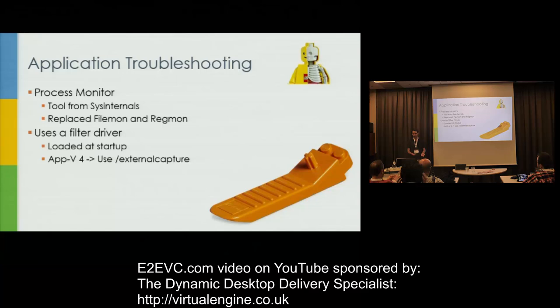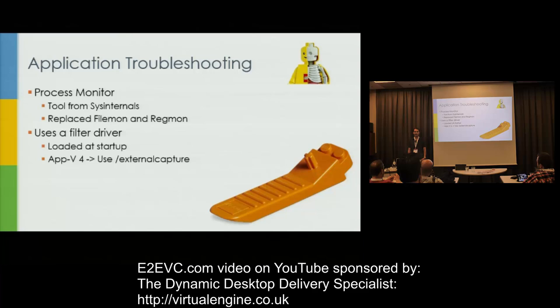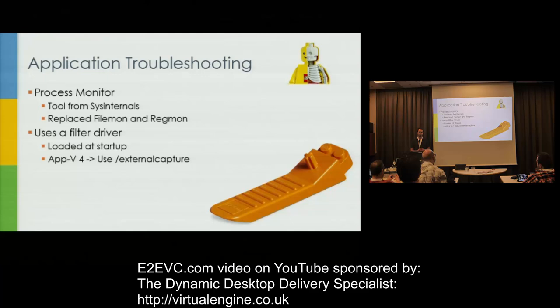With a certain version of Process Monitor they introduced a new switch called 'external capture,' which would allow it to hook into App-V without forcing it to start in that particular order. So basically you could just fire it off, use that switch, and you're good to go. I made a blog article about the difference — primarily it relates to registry access, meaning you see more or less registry keys accessed depending on how you start it, with or without the switch.